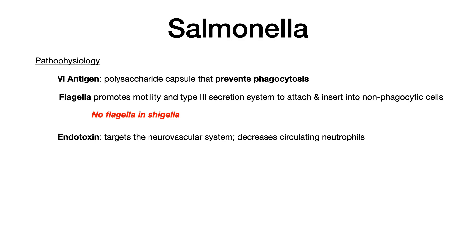For pathophysiology, there are three things you need to know. First, we have a VI antigen, which is basically a polysaccharide capsule. What this does is prevent phagocytosis, so salmonella is not destroyed by immune cells. VI antigen prevents phagocytosis — that's the big takeaway.